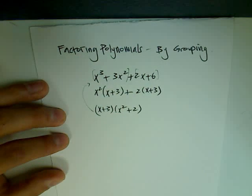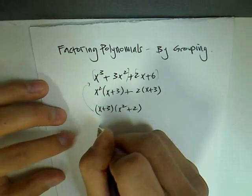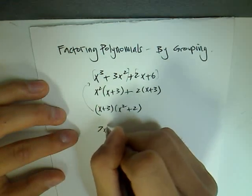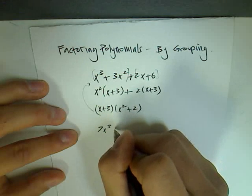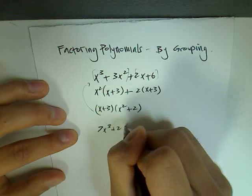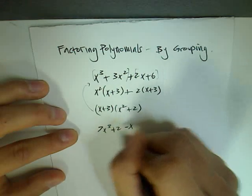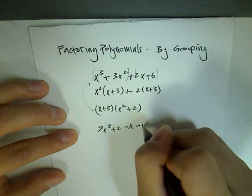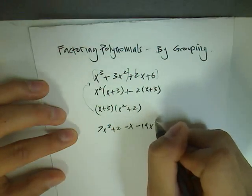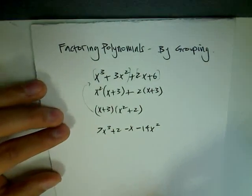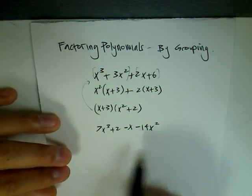Let me show you another example of when you use grouping. Say I'm given the equation 7x cubed plus 2 minus x minus 14x squared. So how would you factor this?